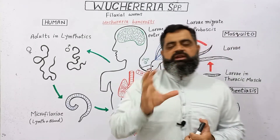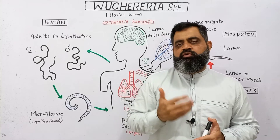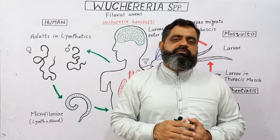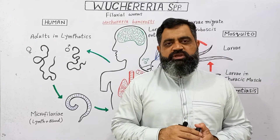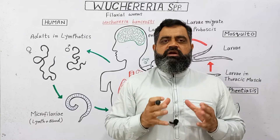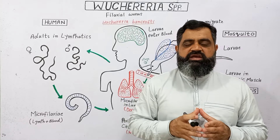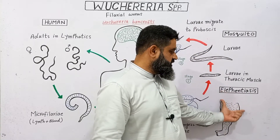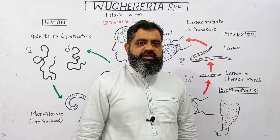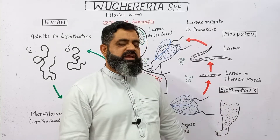First of all, we will try to understand this topic with the help of an example. A person who is visiting a tropical country like Brazil, when he arrives and stays there for a couple of weeks, he suffered from a very rare kind of condition. In this condition, his leg became swollen, as you can see in this diagram. He went to a local doctor for a proper medical checkup and the doctor let him know that he had suffered from a disease known as elephantiasis.